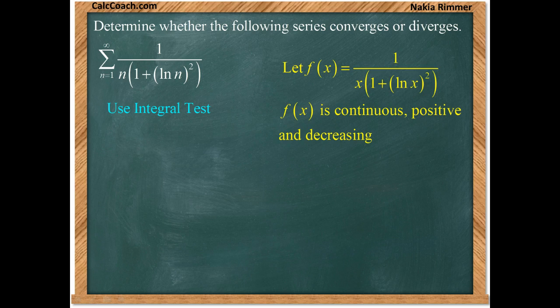On your interval from 1 to infinity, this function will be continuous. There will be no place where the function would be equal to 0 in the denominator, so that wouldn't be a problem. The function is always positive, and then as x grows, the denominator grows, in turn making the whole thing smaller, while the numerator stays constant. So, this function satisfies our three properties.